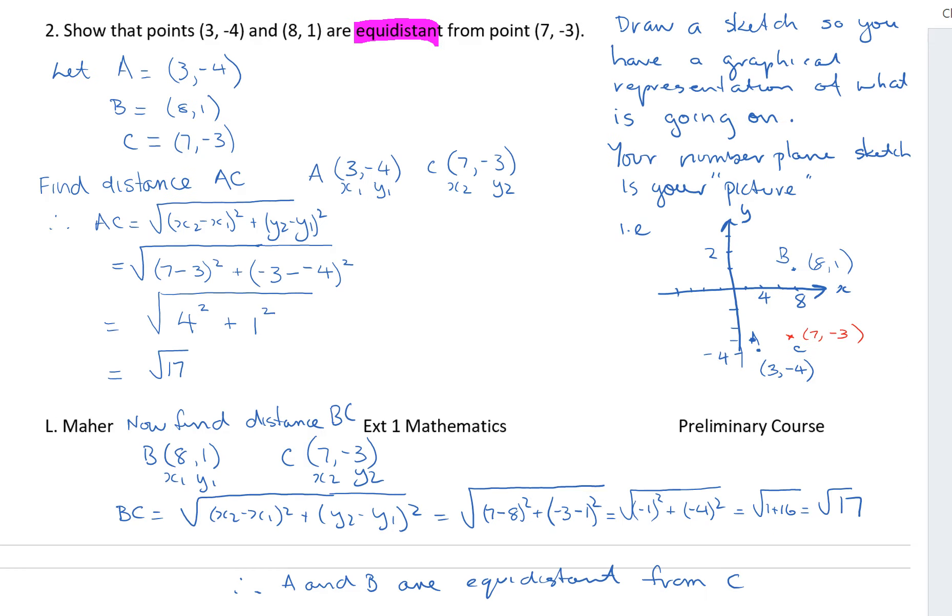In this example, I probably want to talk more about setting out and the way to approach this type of question. You can see I've underlined equidistant because that's my key word. I've drawn the sketch. Your sketch is like your picture. Any problem where you could draw a picture to give you a different understanding of what's going on, it's recommended. If you can draw a picture, then do it.